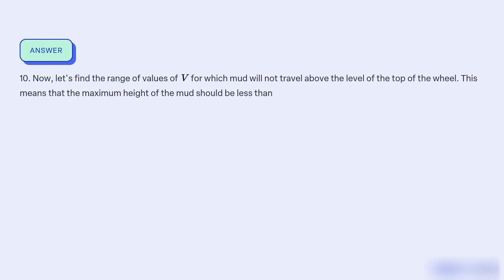10. Now, let's find the range of values of V for which mud will not travel above the level of the top of the wheel. This means that the maximum height of the mud should be less than...